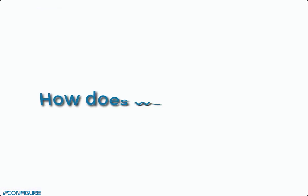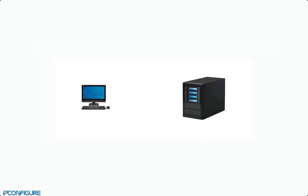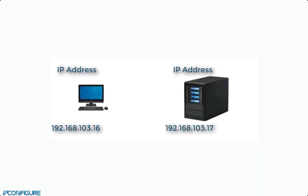But how does WebRTC work? In order for the two devices to communicate, each one must first supply an IP address and a port. The IP address identifies the device and its place on the network or internet, and also allows the device to communicate with other devices on the internet. The port provides a path on which video can travel.